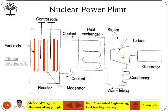When the steam is expanded and is at low pressure and low temperature, it is collected at the condenser where it is cooled. The condenser cools the steam and converts it back into water. The water is again supplied back to the heat exchanger. This is a cyclic process.